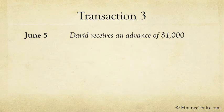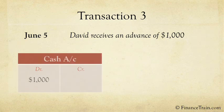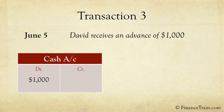In the third transaction, David receives an advance of $1,000. Cash has come in and there is a liability created in the form of unearned revenue. So, the cash account will be debited and the unearned revenue account will be credited.